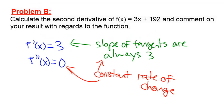Now we're looking at a linear function — this is 3x+192. For a linear function, the slope is the same no matter where you are. When we take the first derivative we get 3, which is that slope. When we take the second derivative we get zero, which means there is no change in that slope — it's neither increasing nor decreasing. It's a constant rate of change, which is what happens with a straight line.